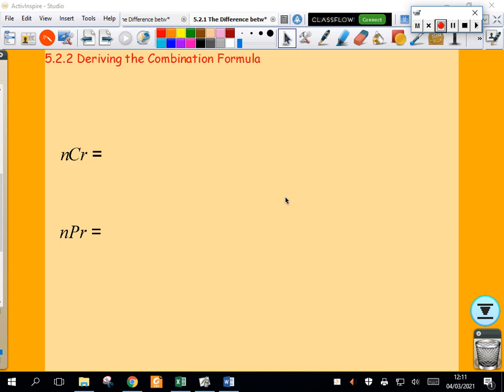In this class I want to look at deriving the combination formula, deriving a formula for n choose r. We know the permutation formula, we've derived that in a previous class. I want to derive the combination formula, so I'm going to look at a couple of examples and then hopefully spot a pattern.